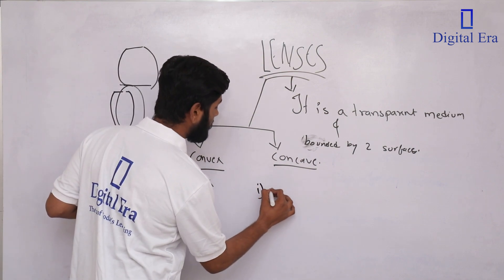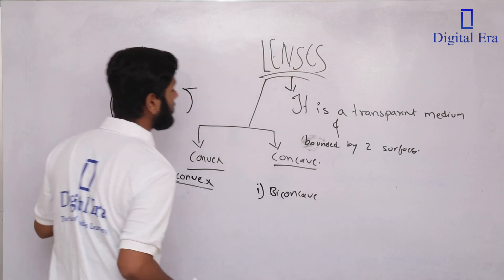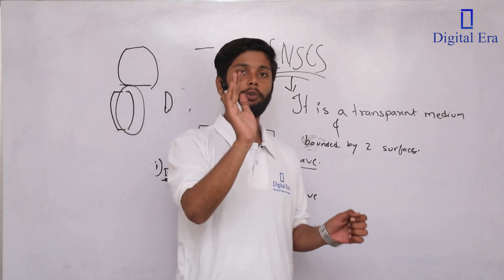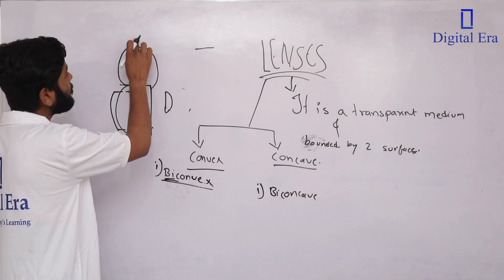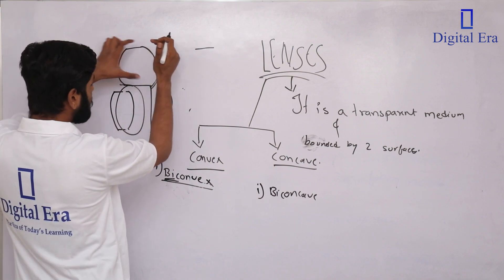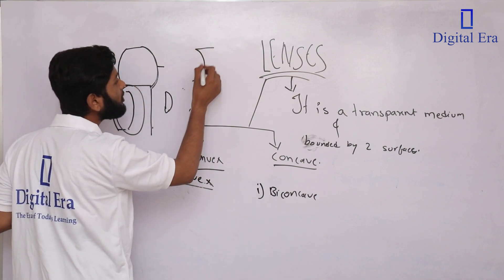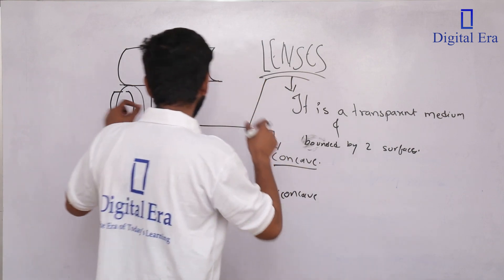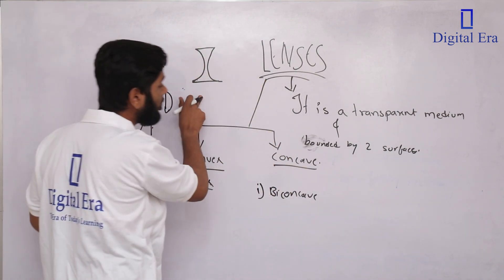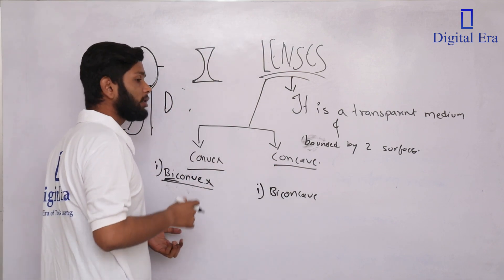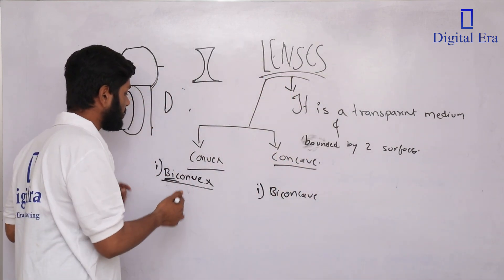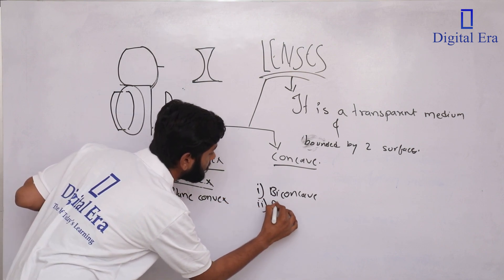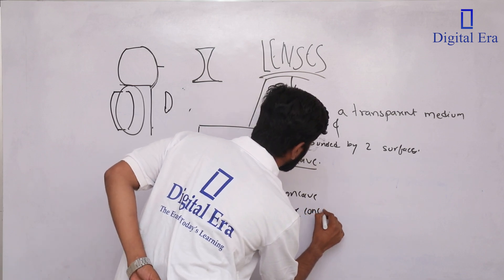We will look at a bigger example. A biconcave lens — imagine a spoon. One part of the spoon is curved outward and one part is curved inward. The outer part represents convex and the inner bowl part represents concave. The lens is spherical, but inside, the sphere curves inward — that is called a biconcave lens.